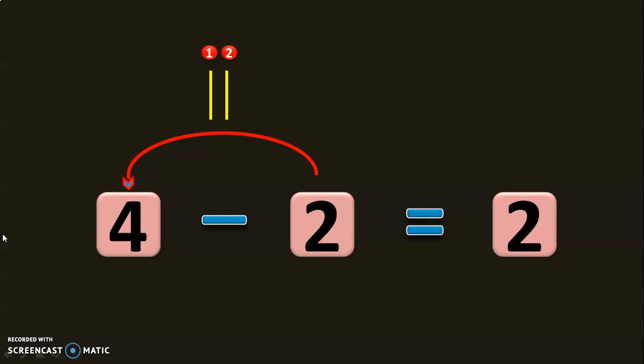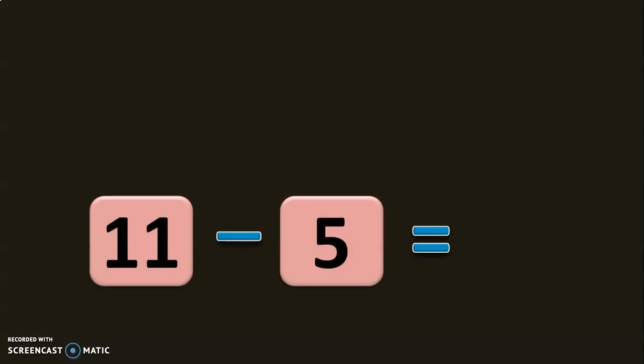Let us do more examples to understand this concept better. Let us take the example of 11 minus 5. So in the forward subtraction method, let us see what are the numbers that you need to reach 11 from 5. So to travel from 5 to 11, we need 6, 7, 8, 9, 10, 11.